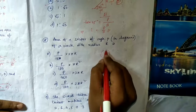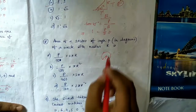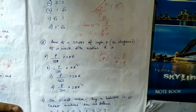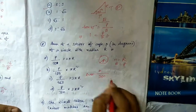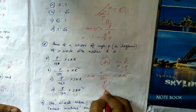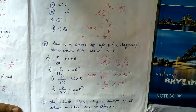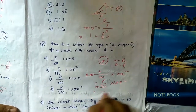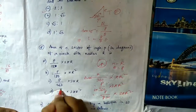Question number eight: find the area of a sector with angle p degrees of a circle with radius R. The formula for area of sector is (θ/360) × πr². Here θ = p, so it becomes (p/360) × πR². Multiplying numerator and denominator by 2 gives (2πR² × p) / 720, which simplifies to pπR²/720.